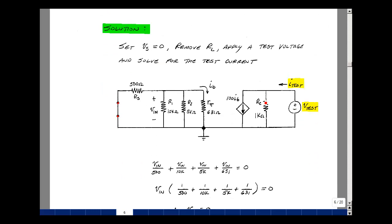The current looking in here is going to be this current plus the current of the controlled source. So let's find the value of the current I-sub-B so we can do that evaluation. With this short circuit, I've got the 500 in parallel with the 10k, 5k, and 631 ohm resistors.